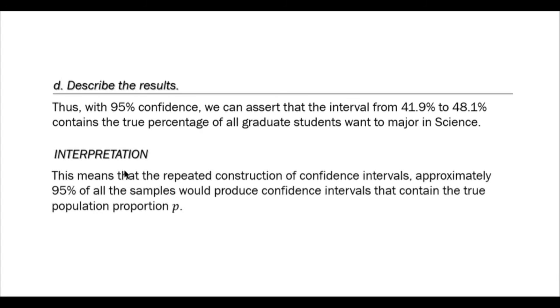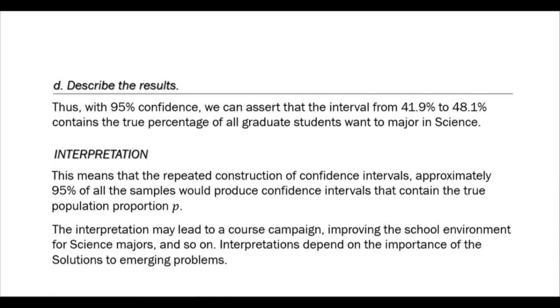This means that with repeated construction of confidence intervals, approximately 95% of all the samples would produce confidence intervals that contain the true population proportion p. The interpretation may lead to a course campaign, improving the school environment for science majors, and so on. Interpretation depends on the importance of the solutions to emerging problems.